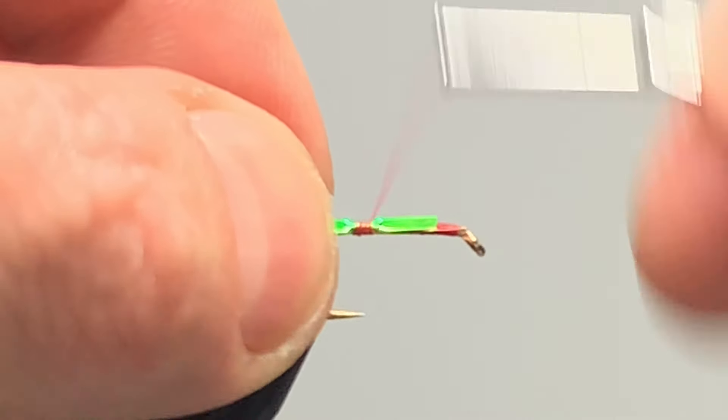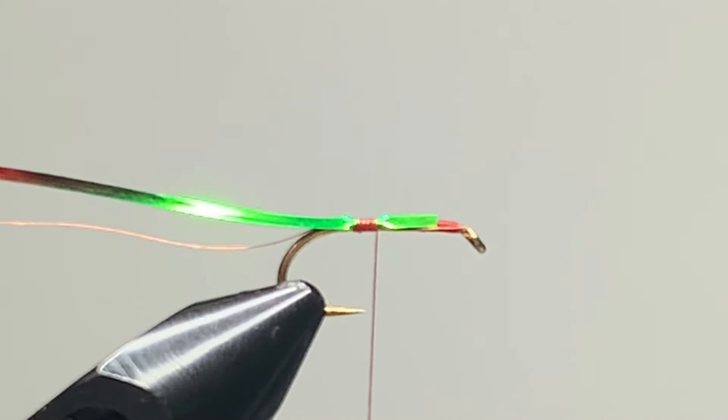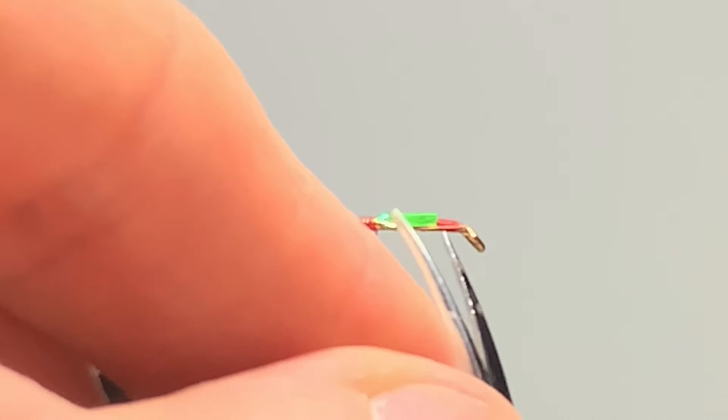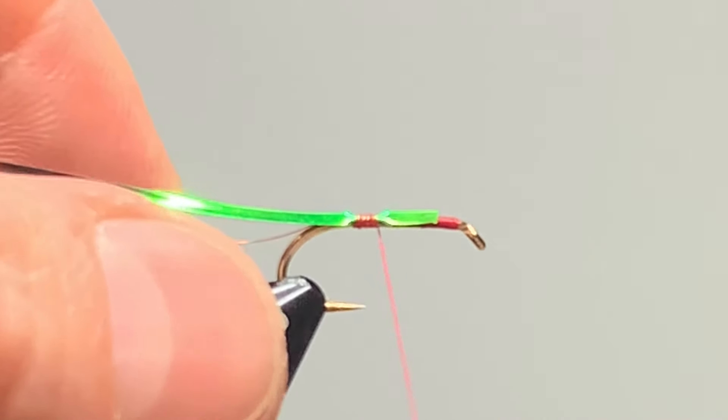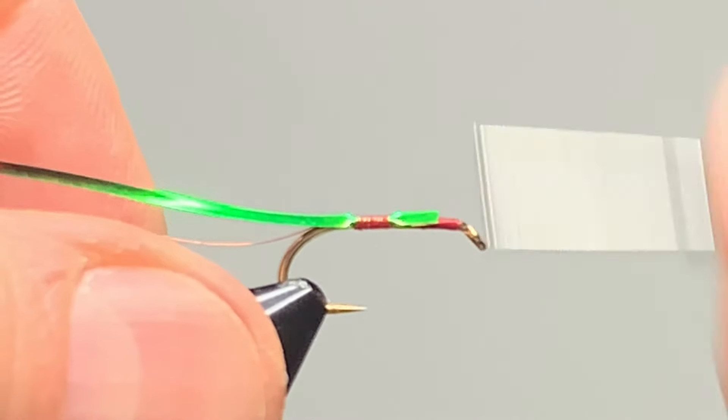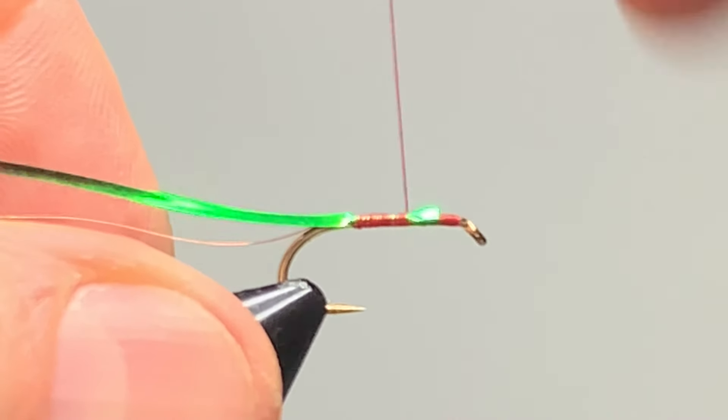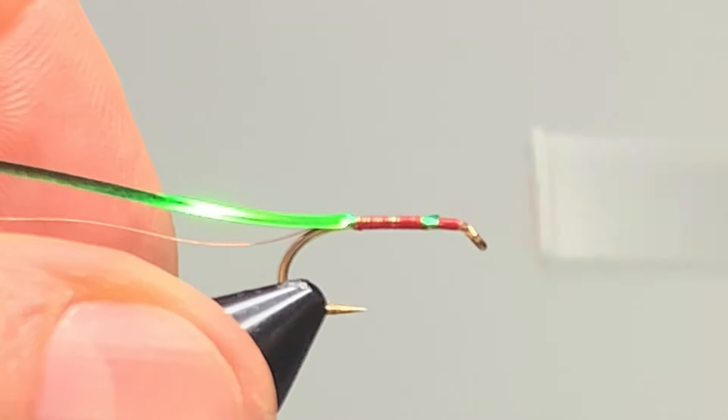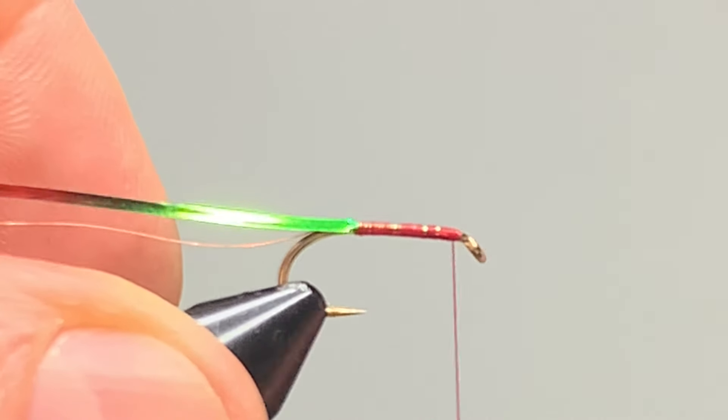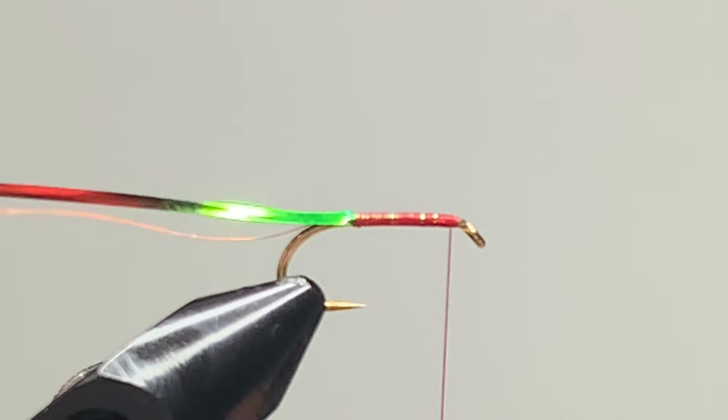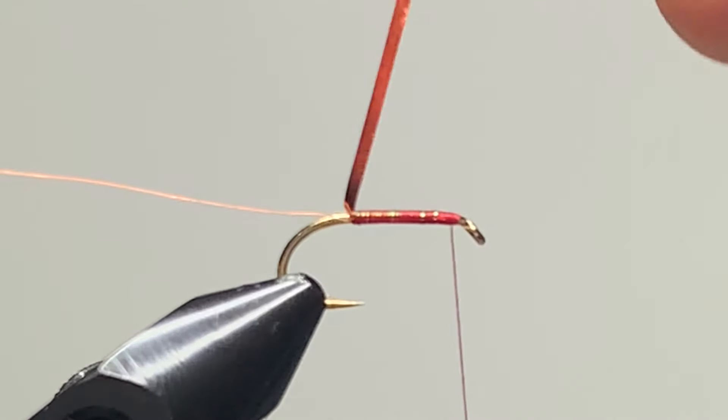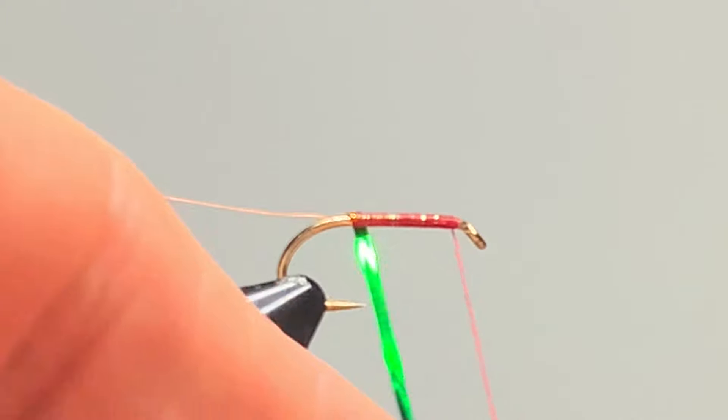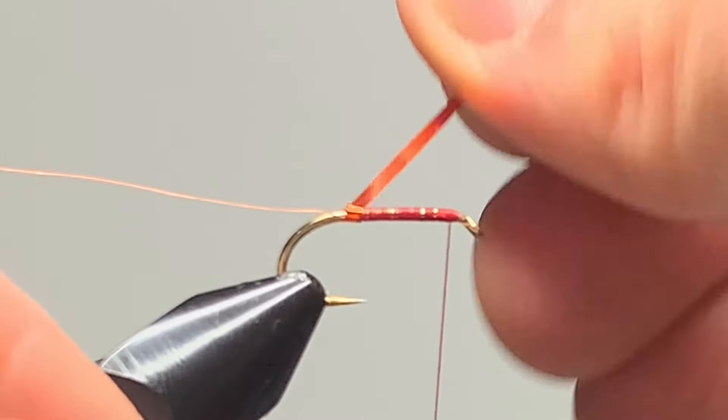Secure it in and work your way up. I'm just going to clip some of that wire because it'll be passing by the eye of the hook if I leave it, and secure in the rest of the material. Right up to the eye of the hook, leave enough space for your marabou and wind on your orange tinsel.